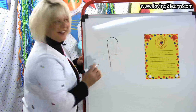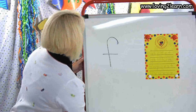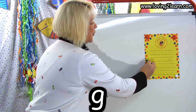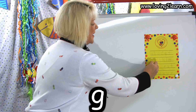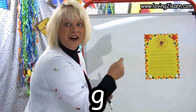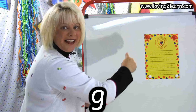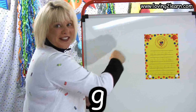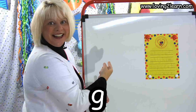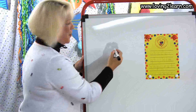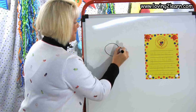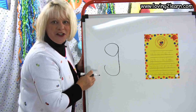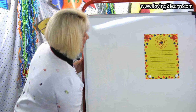Let's write the letter F on the whiteboard: candy cane down, cross in the middle. There's that small F. The next letter is the letter G. Circle around the top, straight line down, and a fish hook in. Let's do it in the air: circle around the top, straight line down, and a fish hook in. Let's write it on the whiteboard: circle around the top, straight line down, and a fish hook in. There's the small letter G.